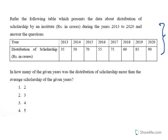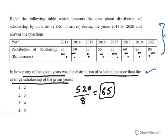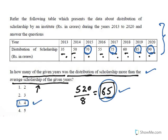The next question: in how many of the given years was the distribution of scholarship more than the average scholarship of the given years? There are 8 years total. Summing all scholarship values gives 520 crores; divided by 8, the average is 65 crores. Counting years with more than 65 crores: there are 4 such years. So the answer is 4.